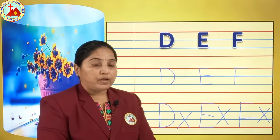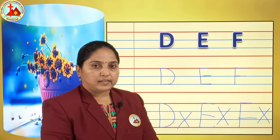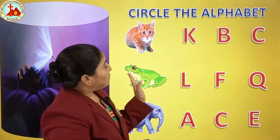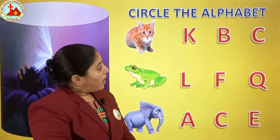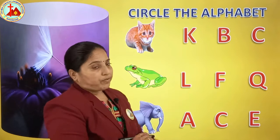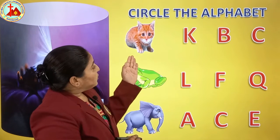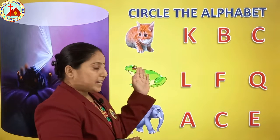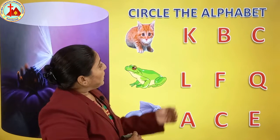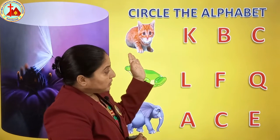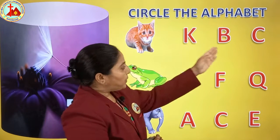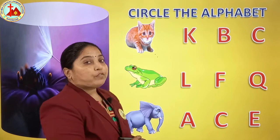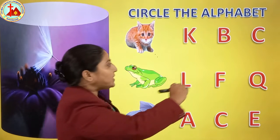So children, be careful whenever you are writing letters. Now in this exercise you have to see the pictures and circle the correct alphabet. In the picture, which animal is this? Yes, this is cat. K for cat? No. B for cat? No. C for cat — yes! So we will circle on letter C.